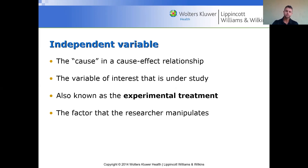The independent variable is the cause in the cause-and-effect relationship. This is the one we're manipulating. When I was talking about diets, we would put everybody on different diets; if talking about exercise, we would use different exercise protocols. Those would be your independent variables. We also call it the experimental treatment — it's the one that we manipulate, play with, or control to see what happens.